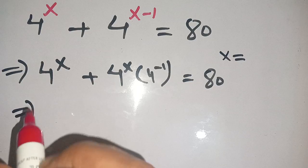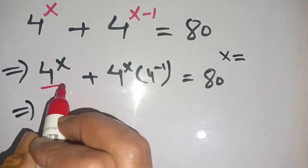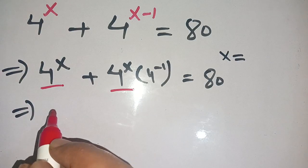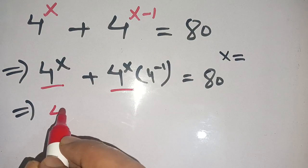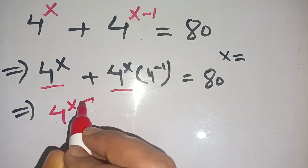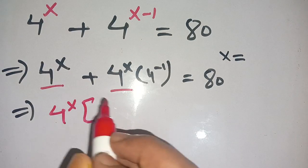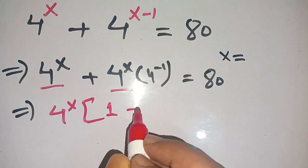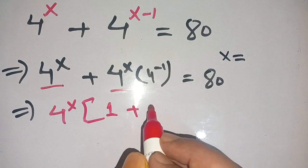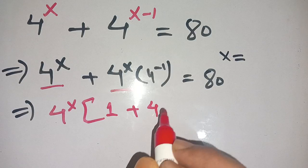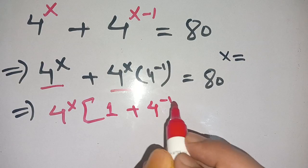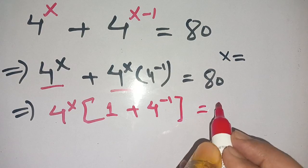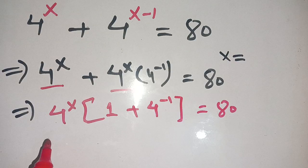We take 4^x out from both terms. This gives us 4^x × (1 + 4^(-1)) = 80.